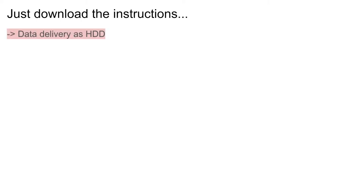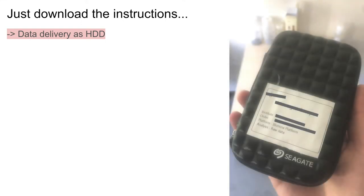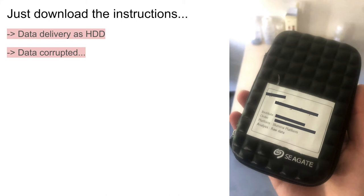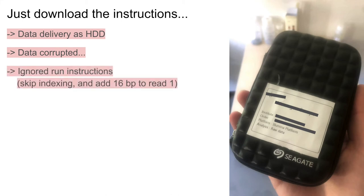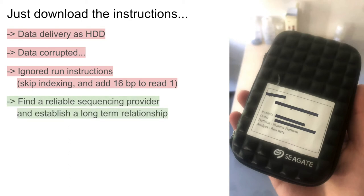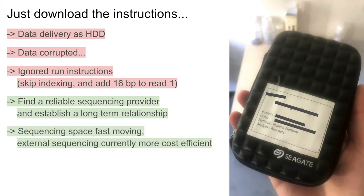There were unfortunately a few hiccups in getting hold of the data as well. The sequencing provider did send the data on a hard drive, which is not super efficient. Also, the data was corrupted — a few files did not contain the correctly formatted data we requested. And the provider also ignored our instructions on how to run the Illumina machine specifically. I recommend having a sequencing provider where you can build a long-term relationship, so they know what kind of data you expect and how to deliver it efficiently. Even with these issues, it's still more cost-efficient to send samples to an external provider in most cases, especially because the sequencing space moves so fast — you don't want to buy a machine that's outdated after a few years.